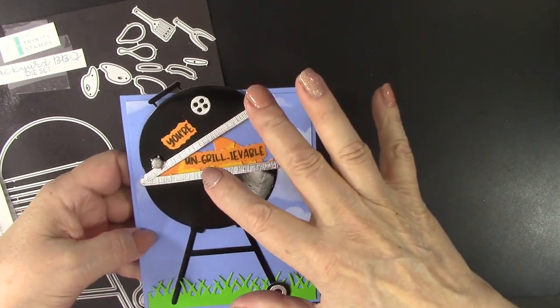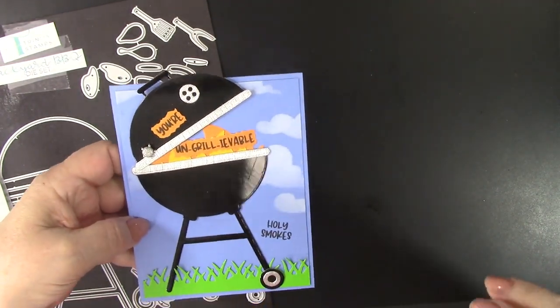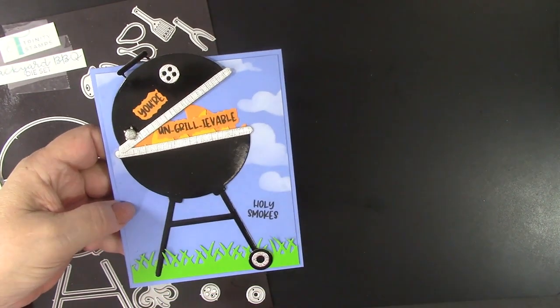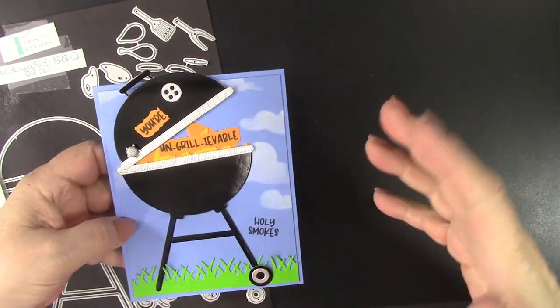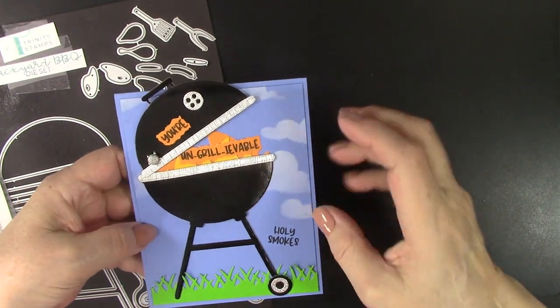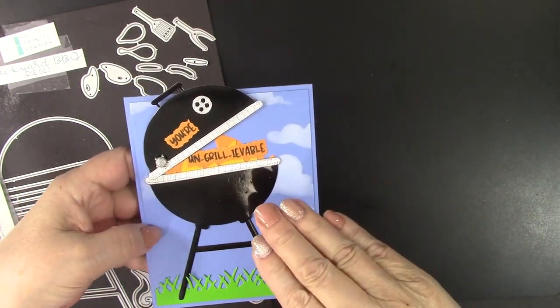It's hard to say. You're Ungrillivable. You're Ungrillivable with Holy Smokes. I love it when stamp sets have a sense of humor to go with die sets. And again, this is a new one from Trinity Stamps.